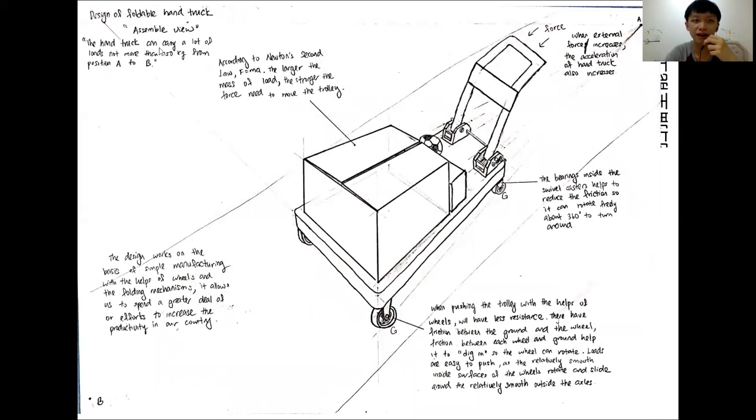The hand truck can carry a lot of loads, not more than 150 kg from position A to position B. In this load, according to Newton's second law, F equals mass multiplied by acceleration. The larger the mass of the load, the stronger the force needed to move the trolley.